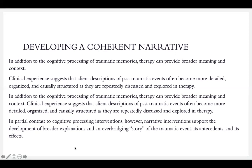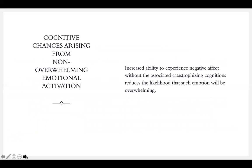In partial contrast to cognitive processing, narrative interventions support the development of a broader explanation and over-bridging story. Cognitive processing looks at the details and challenges and replaces some thoughts, whereas narrative is meant to help with a very cohesive story — start to end. You're going to the over-bridging story of the traumatic event, anything that happened beforehand, and the effects of it. What happened before the trauma and then what happened after — that's where the narrative piece is.